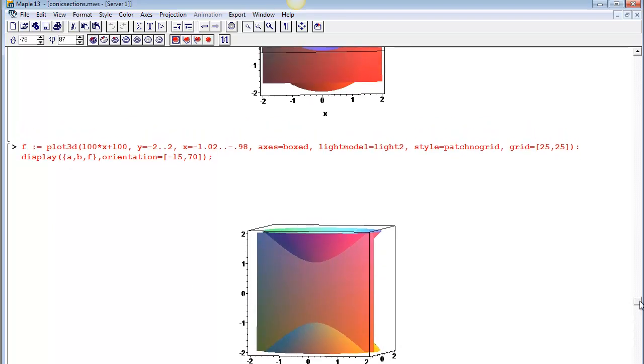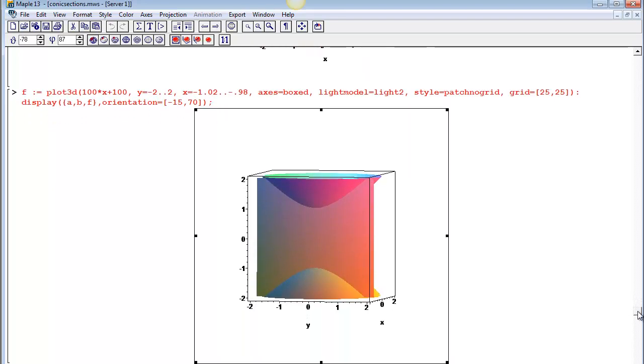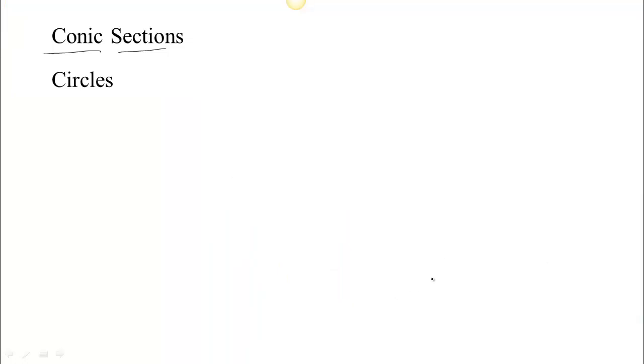So basically, we have ellipses, parabolas, and hyperbolas, and those are the ones that we want to study. The circle is just a special case of the ellipse. Let's just review what you already know about circles, kind of a special case of the ellipse that you have some knowledge about.